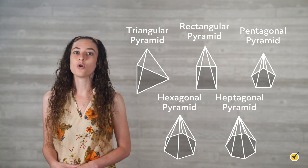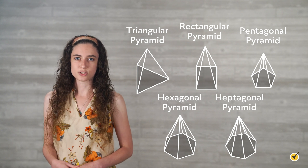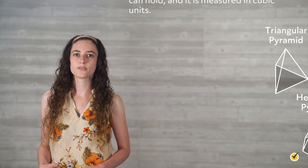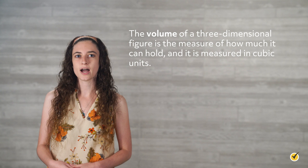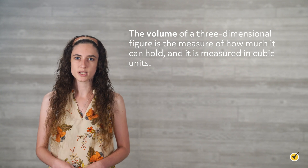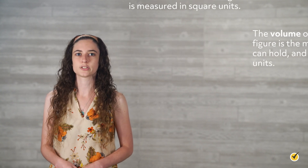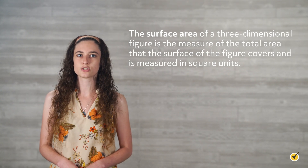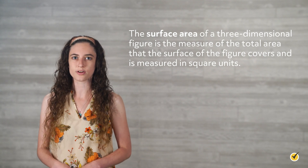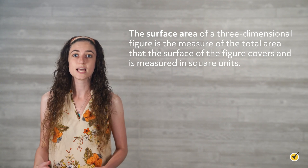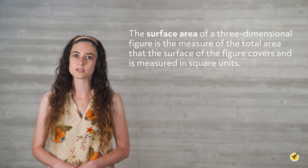Let's take a moment and recall what the volume and surface area of a three-dimensional figure means. The volume of a three-dimensional figure is the measure of how much it can hold, and it is measured in cubic units. The surface area of a three-dimensional figure is the measure of the total area that the surface of the figure covers, and it is measured in square units.